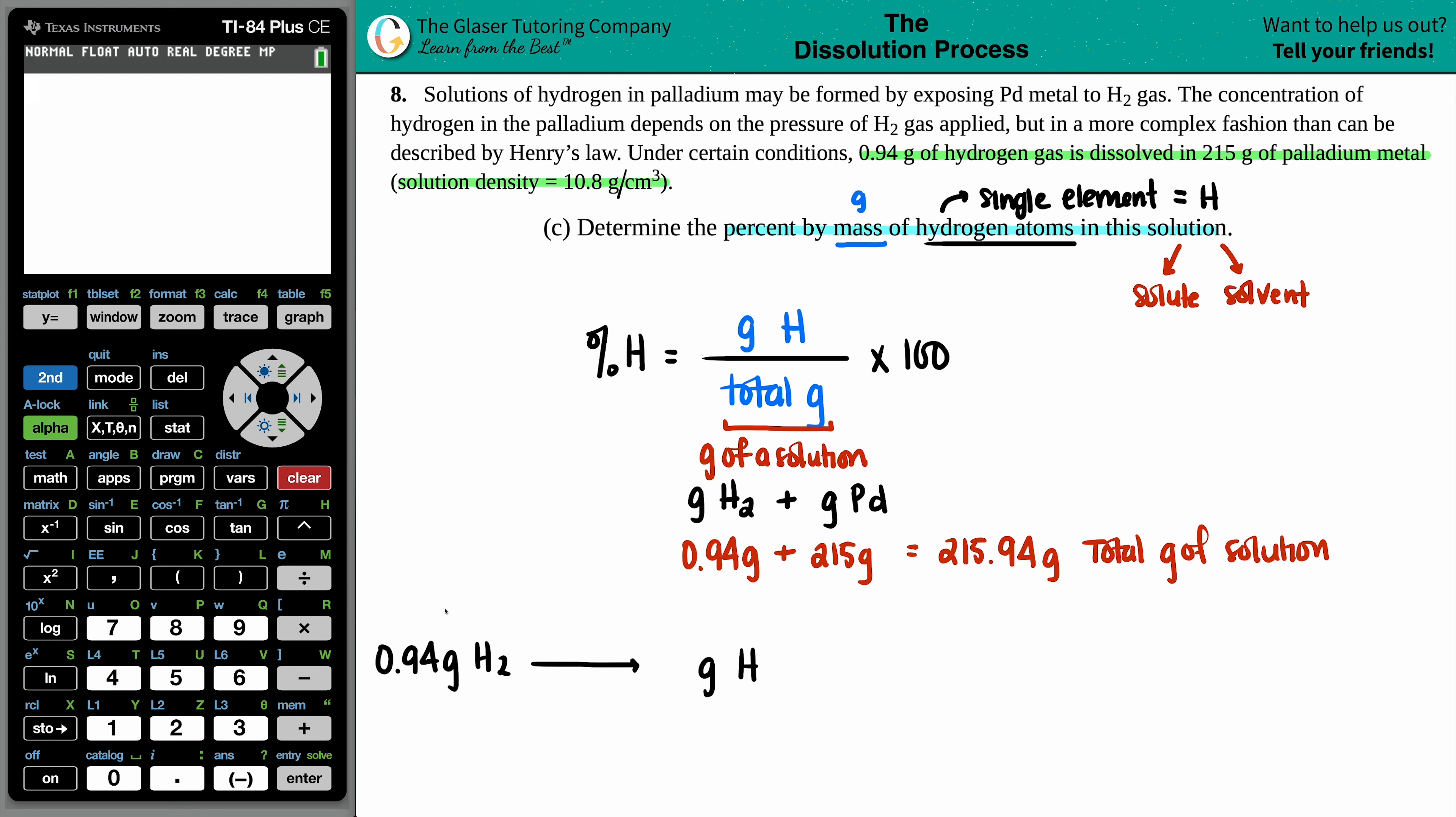But if I want to go from grams of one thing to grams of another thing, I just have to go grams to moles to moles to grams. Let's find out the moles of H2. Then I can get the moles of H, and then I can find the grams of H. So, in this case, 0.94 grams of H2. This is going all the way back to stoichiometry. Grams of H2 on the bottom, mole of H2 up top.